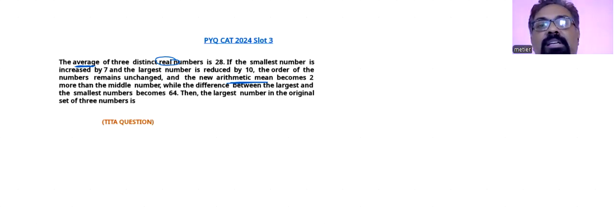They have some relation in between the smallest number and largest number along with the average. Just check: smallest number increased by seven, largest number reduced by 10. So there will have some effect on the arithmetic mean or average.